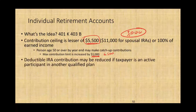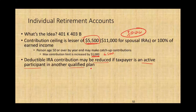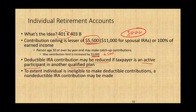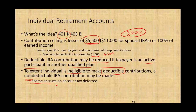Bear in mind, if you are a participant in an active qualified plan — such as a 401k or 403b — the deductible IRA contribution may be reduced. To the extent an individual is ineligible to make a deductible contribution, you can make a non-deductible contribution. Non-deductible means you cannot deduct it for tax purposes this year. But the good thing about the IRA is the income accrues tax-deferred — you don't have to pay taxes on it now. It will grow tax-deferred until you take it out.